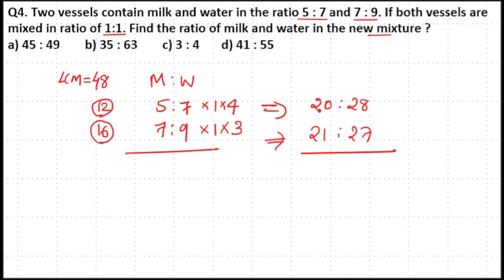So now 20 plus 28 equals 48 parts, 21 plus 27 equals 48 parts. Parts are equal, so you can directly add the ratio. That is, 20 plus 21 equals 41. 8 plus 7 is 5, 2 plus 2 is 4 plus 1 is 5. So 41:55.